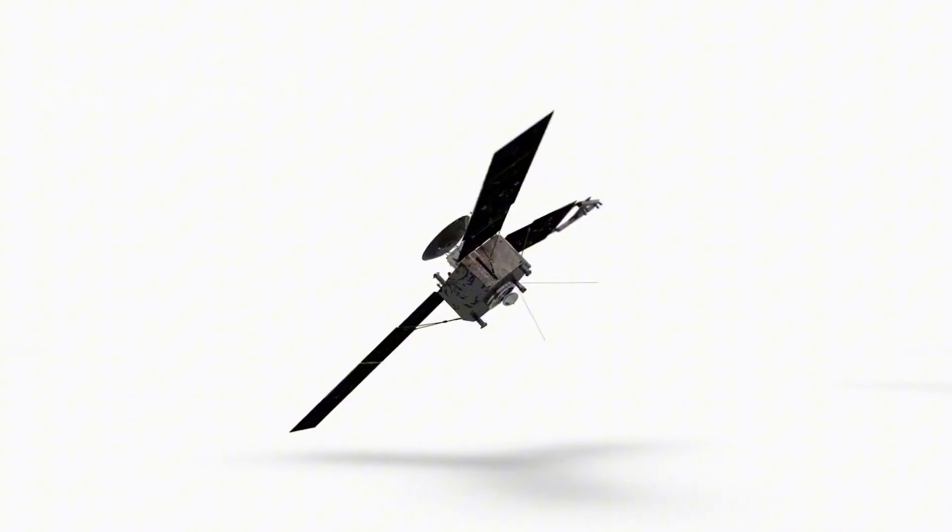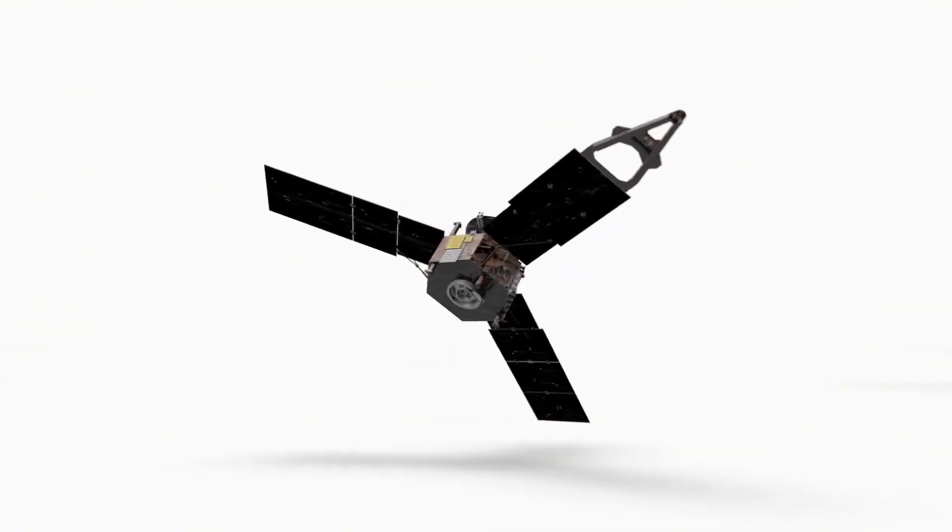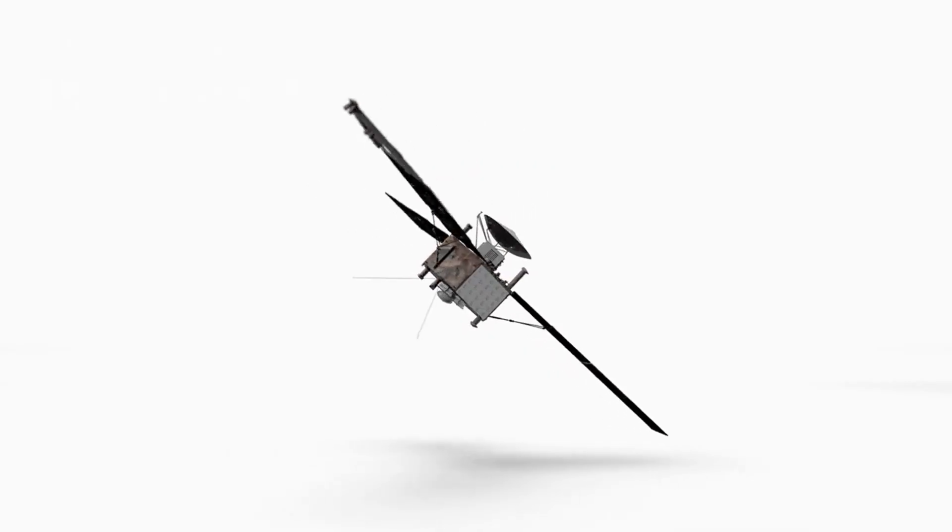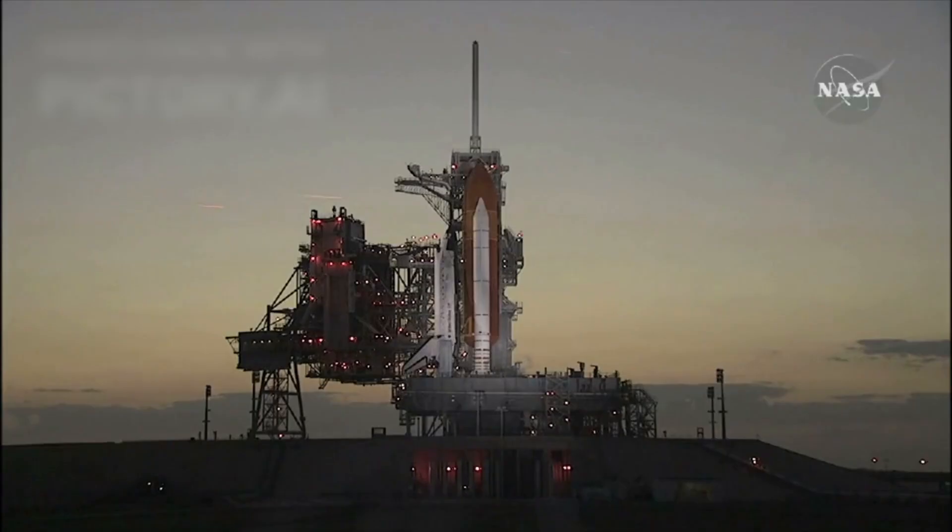Voyager 1 was originally tasked with conducting close-up studies of Jupiter, Saturn, and their largest moons, as well as the magnetic environments surrounding these planets. Alongside its twin, Voyager 2, it would perform flybys that promised to reveal new worlds in unprecedented detail.